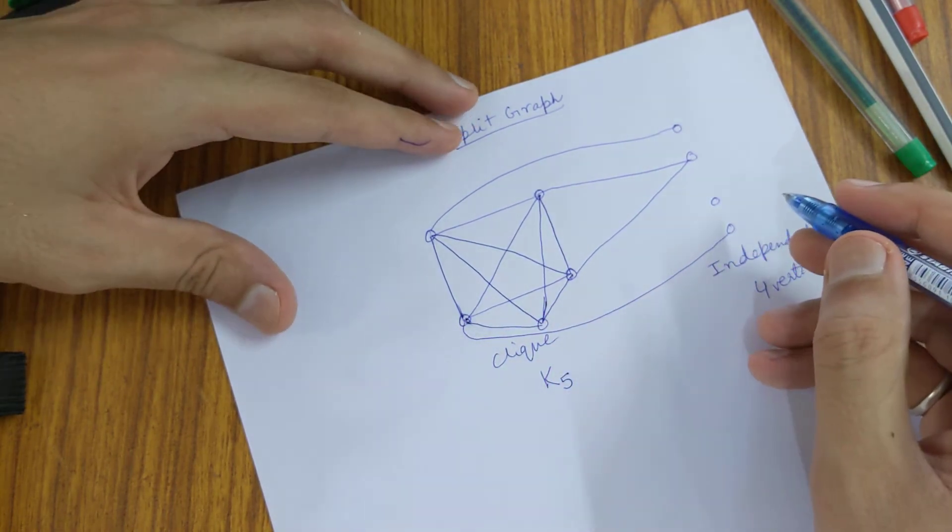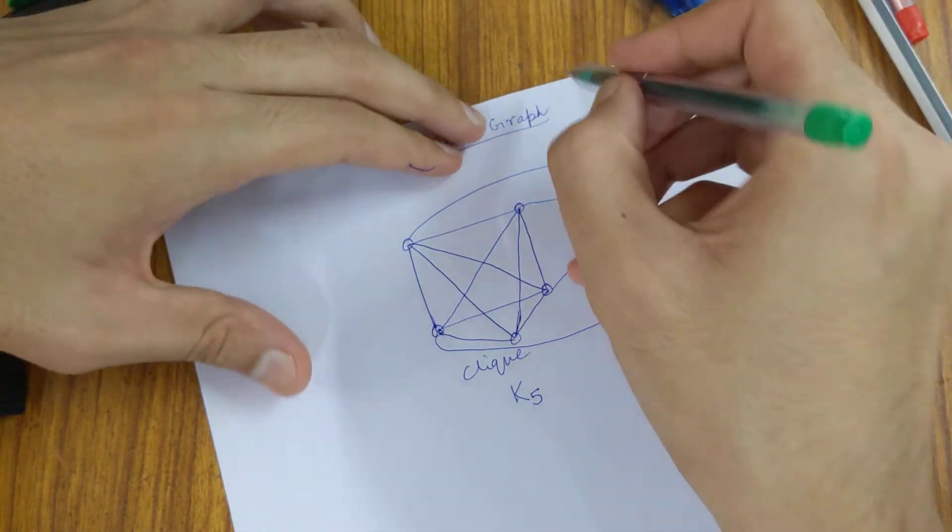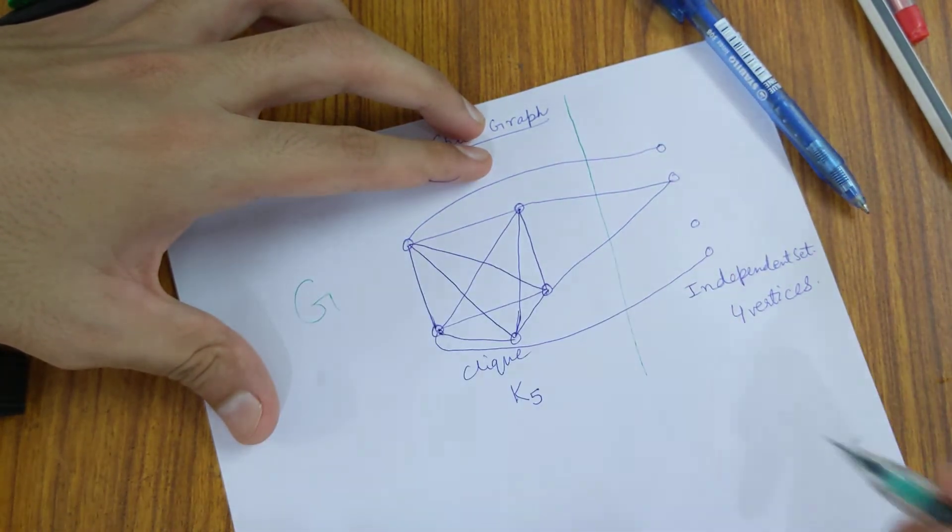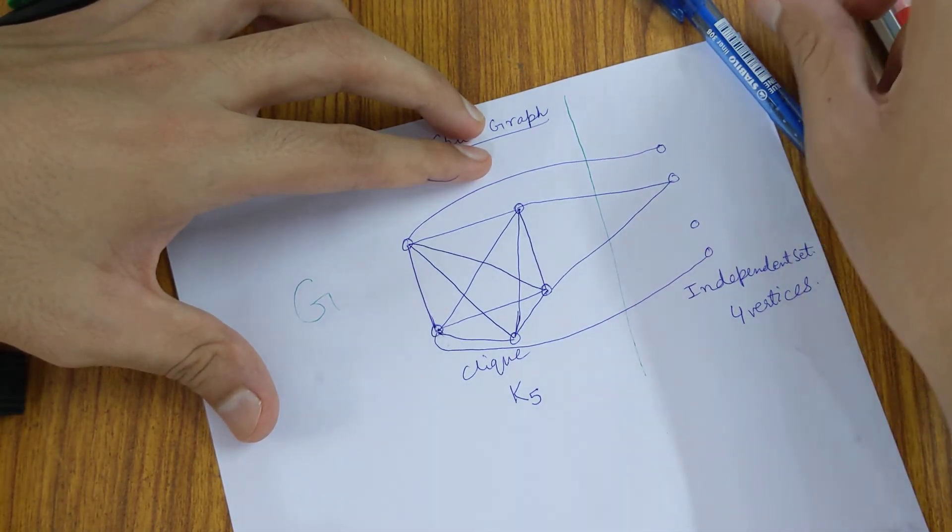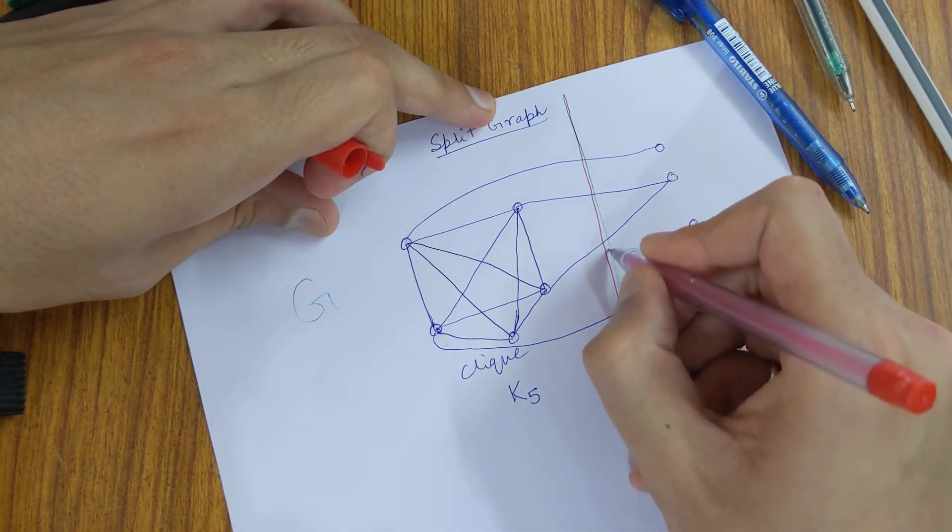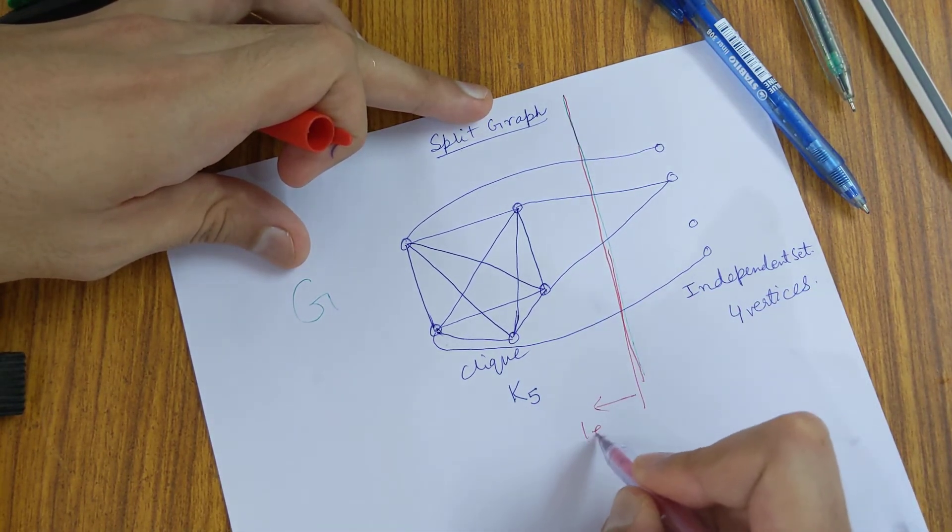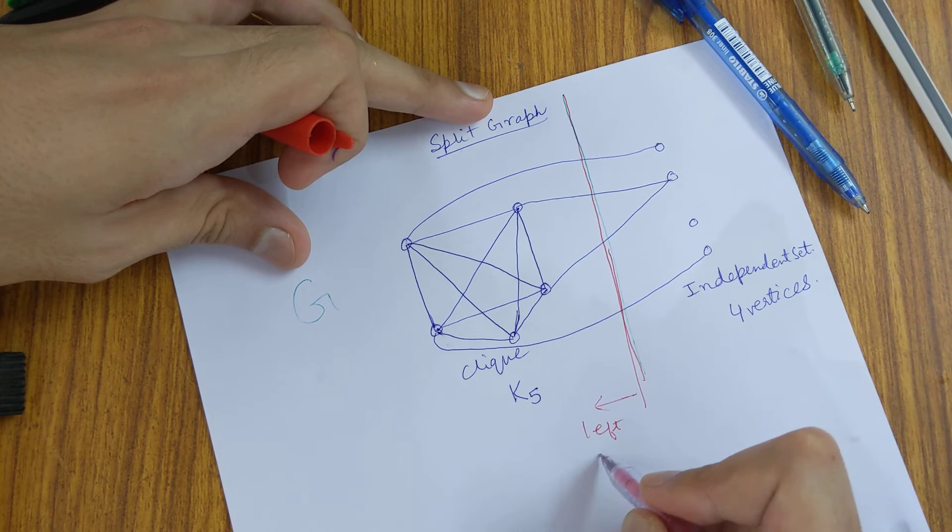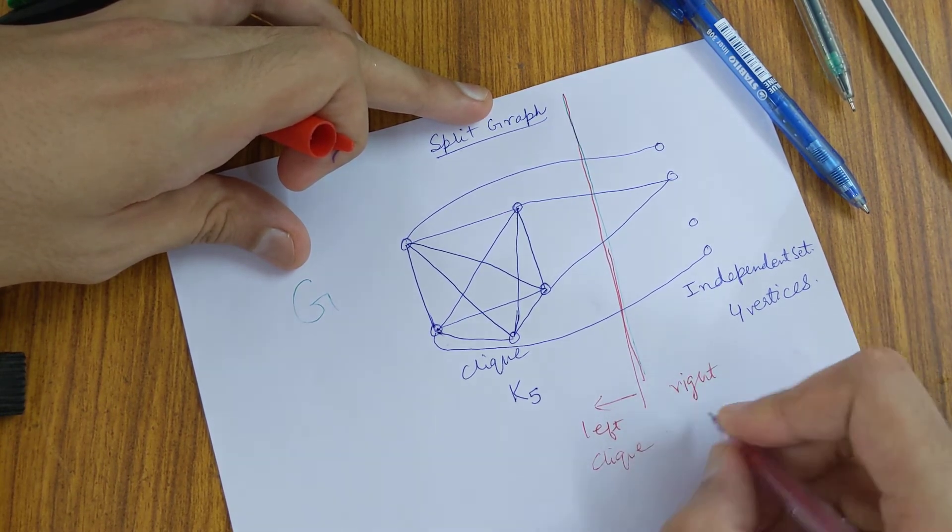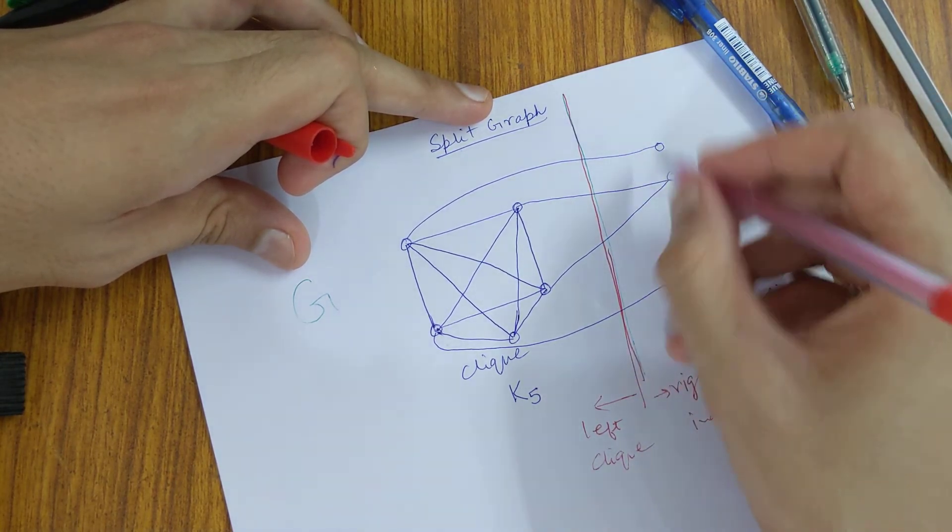So basically, if we partition this graph G into two parts using this line, the left part is a clique and the right part is an independent set. These four vertices form an independent set.